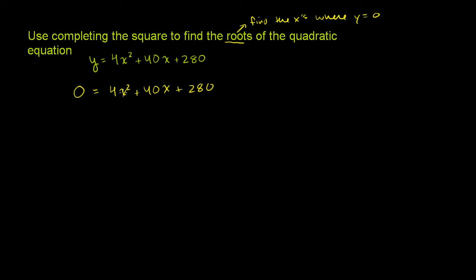Now the first step that we might want to do, just because it looks like all three of these terms are divisible by 4, is just divide both sides of this equation by 4. That'll make our math a little bit simpler. So let's just divide everything by 4. If we divide everything by 4, we get 0 is equal to x squared plus 10x. This is 10x plus 280 divided by 4 is 70. Plus 70.